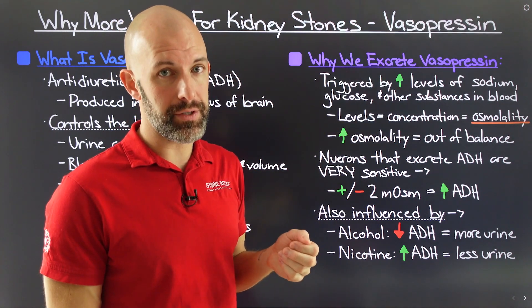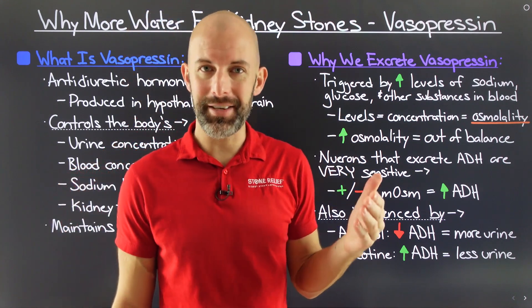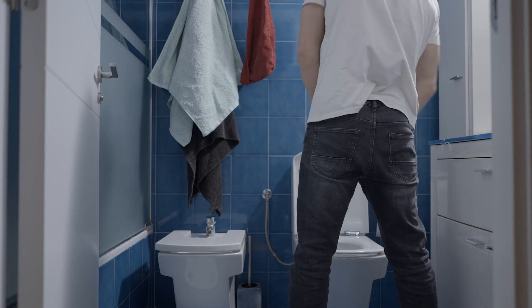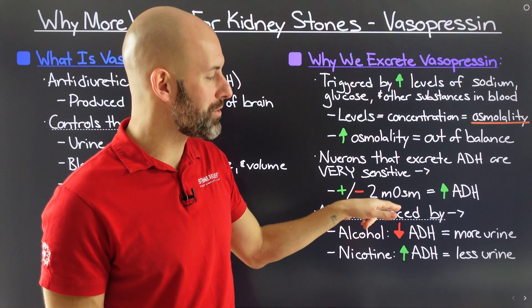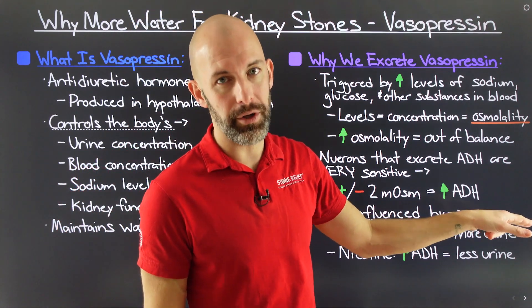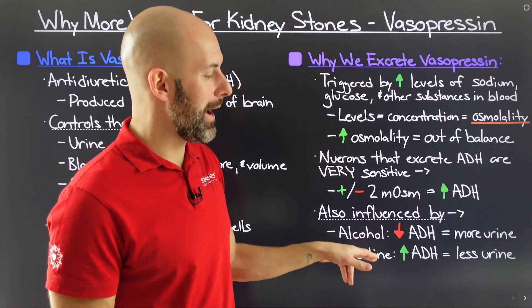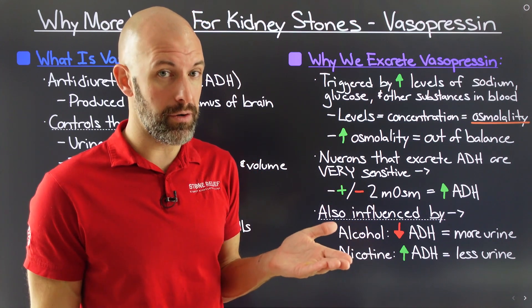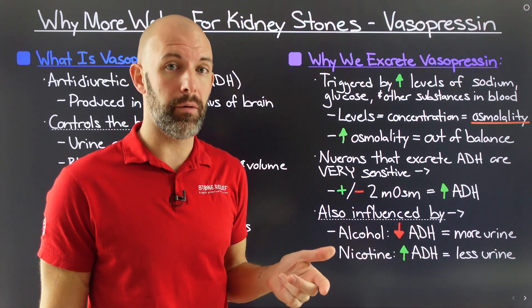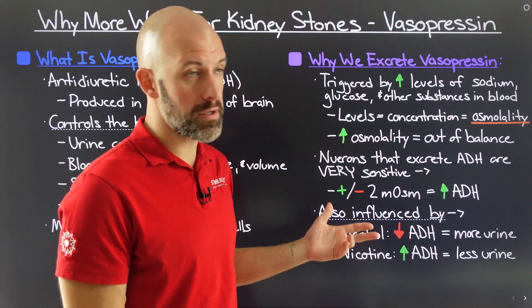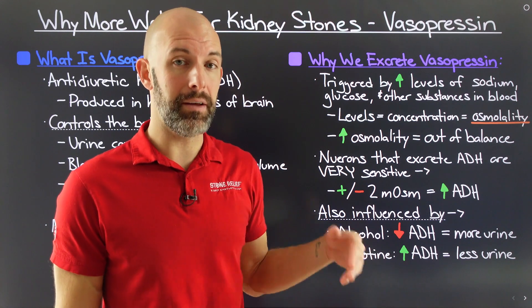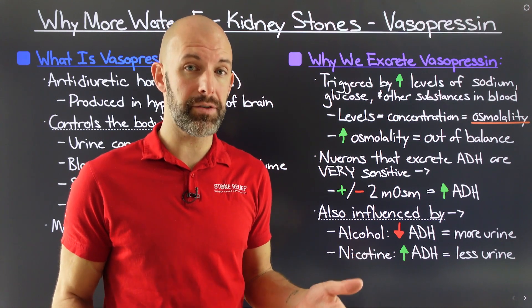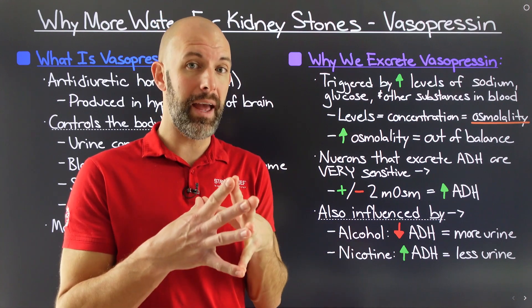There are some external factors that influence this as well. Alcohol is a big-time influencer — if you've ever been out with friends having a few drinks and found you have to urinate quite frequently, this is vasopressin or the anti-diuretic hormone at work, because alcohol suppresses ADH, which means you are going to create more urine. On the opposite side, nicotine actually increases the presence of ADH, which triggers the reabsorption of water into the kidneys, concentrating your urine so you pass less urine. This starts to make sense given smoking's impact on kidney stone risk, because as you have less urine passing, it becomes more concentrated, and the more concentrated your urine, the more opportunity there is for lithogenic factors such as calcium, oxalate, phosphate, and uric acid to bind together and form kidney stones.